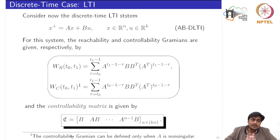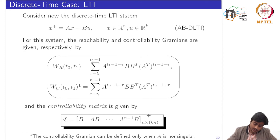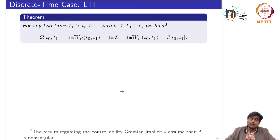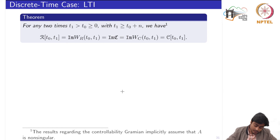For the LTI discrete time system, analogous to the continuous time scenario, we introduce the controllability matrix. There are three important parts: the discrete time system itself, the controllability and reachability Gramians, and additionally the controllability matrix. A key result establishes the equivalence between the reachable subspace, its characterization via the Gramians, and for the LTI case via the controllability matrix — showing all these subspaces are equivalent.